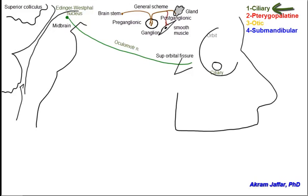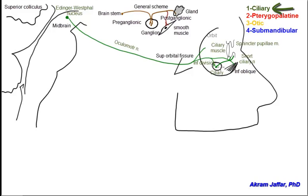As the oculomotor nerve enters the orbit, it divides into superior and inferior divisions. The preganglionic fibers accompany its inferior division, specifically the branch to the inferior oblique muscle. The preganglionic fibers relay in the ciliary ganglion, and the postganglionic fibers pass through short ciliary nerves into the sphincter pupilli and ciliary muscles, serving for pupillary constriction and accommodation.